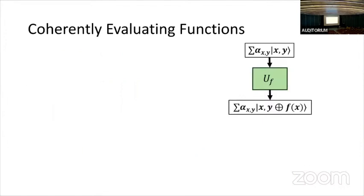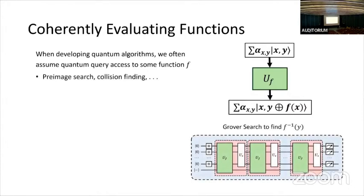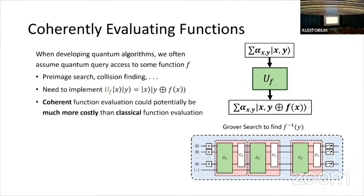We're actually interested in a harder problem, which is coherently evaluating functions — that is, evaluating them in superposition. This is a common task, because for a lot of the quantum advantages we want to use, we usually assume black-box access to some function. In reality, though, we have to implement those oracles. It can be much more difficult to design an efficient, coherent quantum circuit for evaluating the function than to design a classical algorithm to evaluate it classically, in part due to the reversibility of quantum computation.